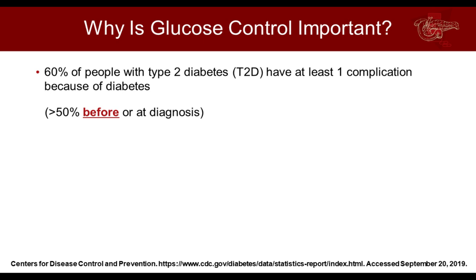A person doesn't wake up one day and say, 'I think I have diabetes.' They wake up peeing more often, or they have a urinary tract infection, a wound that won't heal, blurry vision, or they have a heart attack or stroke — and then they're found to have type 2 diabetes. It takes about 9 years of hyperglycemia before we can actually diagnose type 2 diabetes. So by the time the person is diagnosed, they've already had complications — at least 50% to 60% of people have complications at the time of diagnosis, whether microvascular or macrovascular.